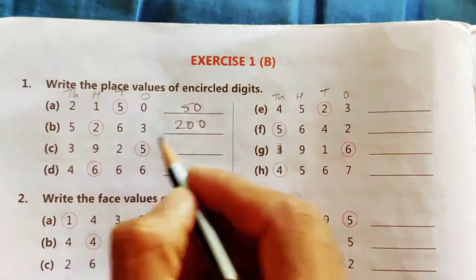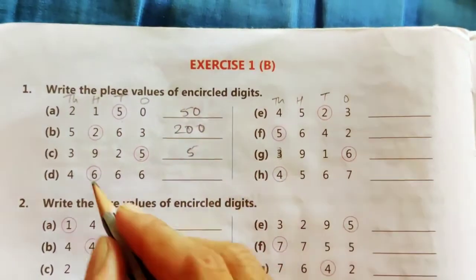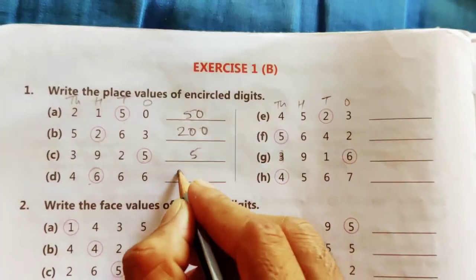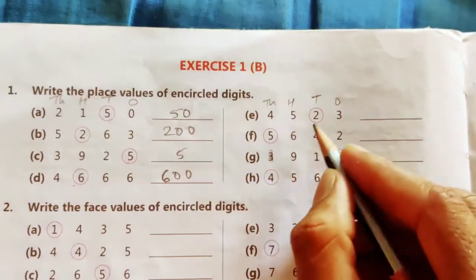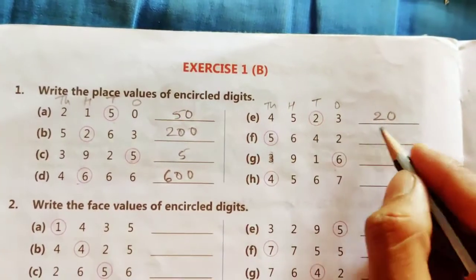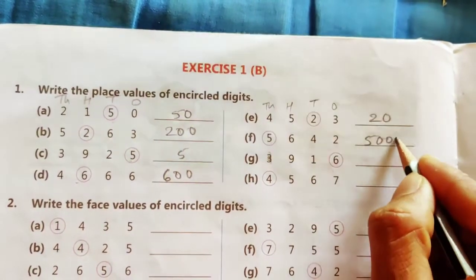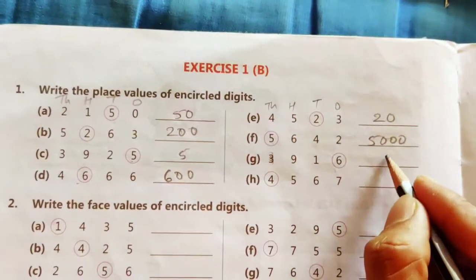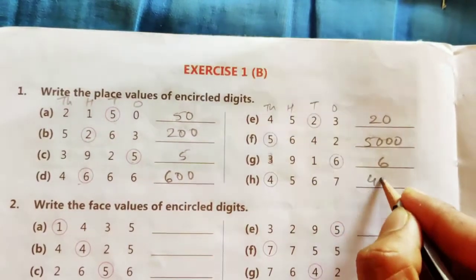Here 5 is in the place of ones, so it will be 5. 6 is in the hundreds place, so it will be 600. In the same way here also, 2 in the tens place, so it is 20. 5 in the thousands place, so it is 5000. 6 in the ones place, so 6. 4 in the thousands place, so 4000.